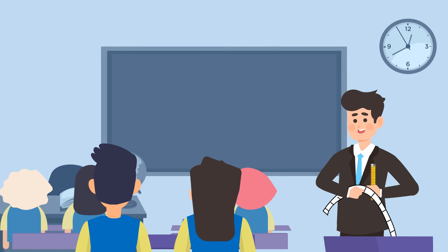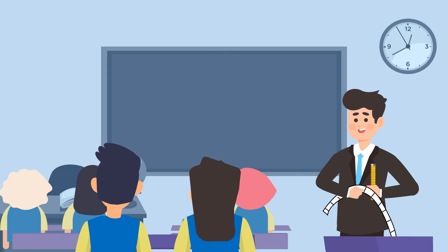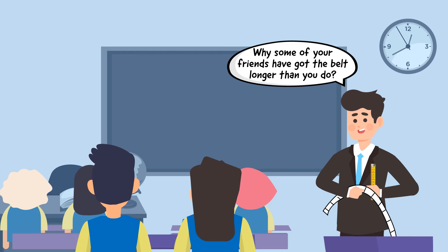Follow this up by inquiring what is the area of the belt. Let the students respond. To help them get the gist of area and perimeter, ask them why have some of your friends got longer belts than the others. Accept all the possible responses.